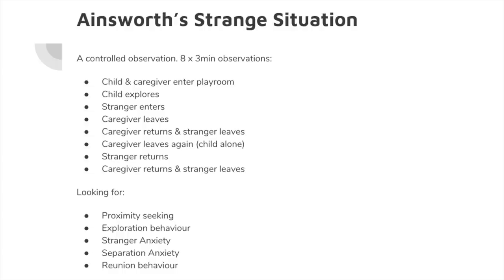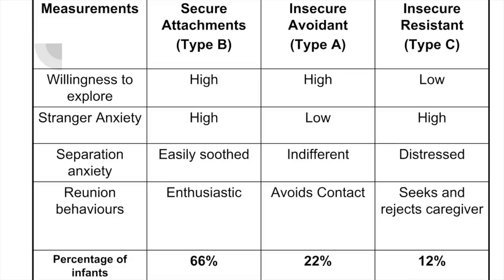They were looking for: proximity seeking — how close the infant stays to the caregiver; exploration behaviour — do they look around the room; stranger anxiety — what the child does when the stranger comes in; separation anxiety — what happens when the caregiver leaves; and reunion behaviour — what happens when the caregiver comes back. Generally, Ainsworth identified three types of attachment. 66% of the time — the most common — the infant would explore the room when the caregiver was there, not like the stranger, not like it when the mother left, but be easily soothed when she came back, and be enthusiastic when the mother returned. So willingness to explore was high, stranger anxiety was high, separation anxiety was high, and reunion behaviour was enthusiastic. That was known as a secure attachment, or type B.